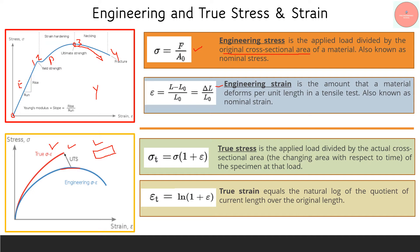By definition, engineering stress is force divided by original cross-sectional area, and engineering strain is the change in length divided by original length — delta L by L-naught. For true stress, sigma-T, the main comparison lets us find the true stress-strain curve from engineering stress values. Engineering stress multiplied by (1 plus epsilon) gives true stress, and for true strain we use the logarithm of (1 plus epsilon).